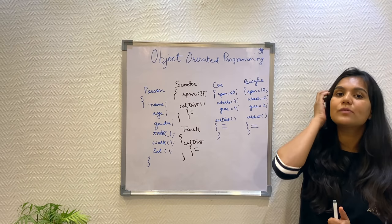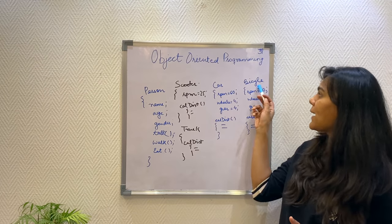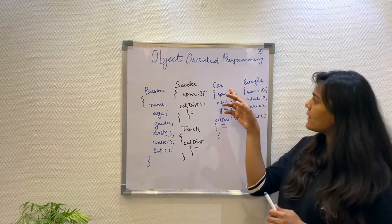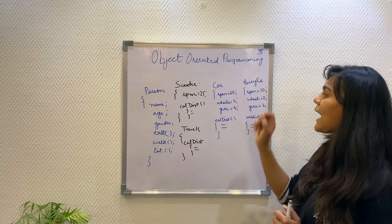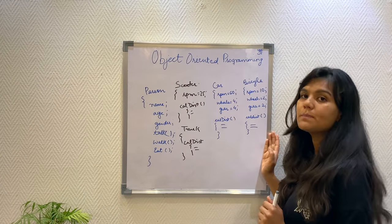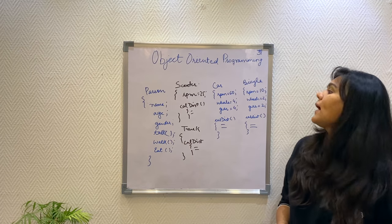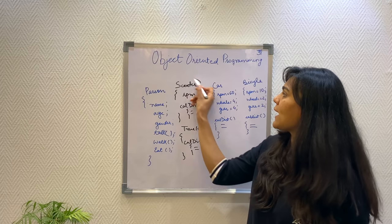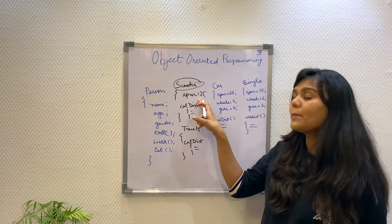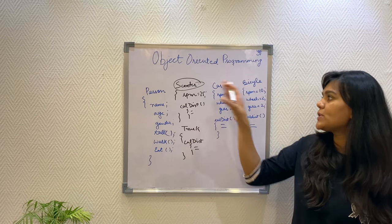So our object is the vehicle and I have created two classes, the car and the bicycle, for those two objects. The car and the bicycle have their own properties of RPM and have their own calculate distance method. When a new vehicle scooter is introduced, I will just have to create a new class for the scooter with its own RPM property and its own calculate distance method without changing the existing code.